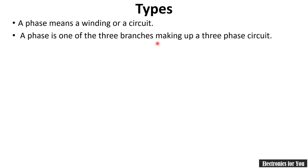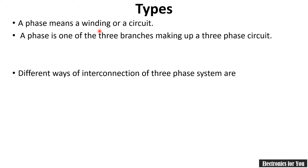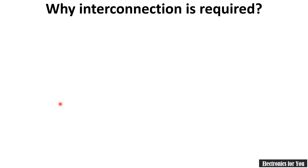A phase is one of the three branches making up the three-phase circuit. We know that in a three-phase circuit we have three different phases. The connection of three-phase winding is categorized into two main parts: star connection and delta connection. Let us see first what is the need of interconnection.